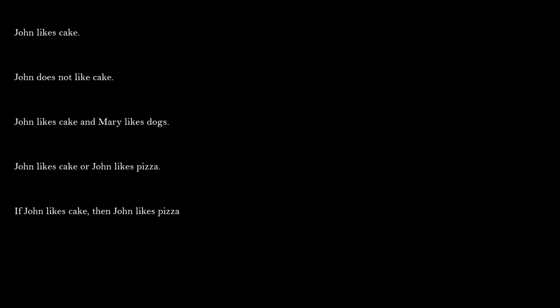We have the sentence 'John likes cake.' We're going to make this whole sentence one atom — we'll call it C, where C equals 'John likes cake.' This is how we formalize our sentence. C is the correct formalization of 'John likes cake.' You can pick any letter you want; it doesn't matter. It's just one variable because there are no connectives in the sentence.